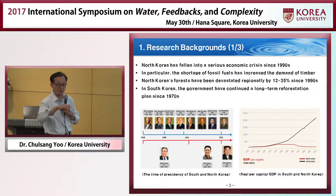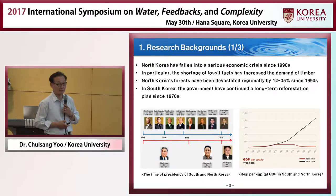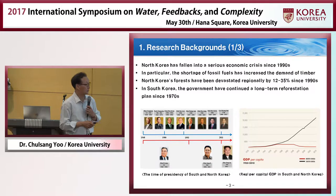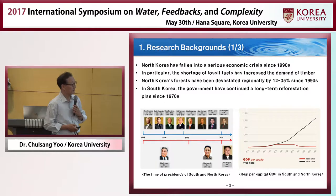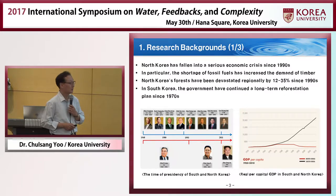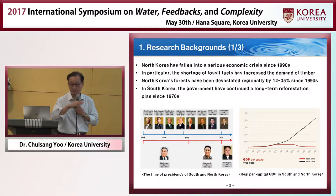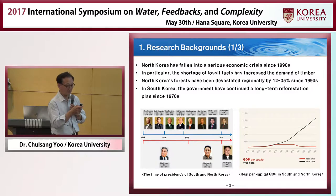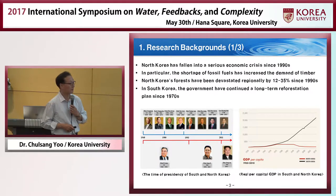But finally, he failed at the end of his ruling period. In fact, he prepared another dramatic economic development plan for the 1990s, but unfortunately they failed and could not increase the per capita GDP. As you can see in this figure, until the 1980s, the GDP per capita was a bit larger in North Korea, so their living standard was a bit higher than in South Korea. But after the 1980s, South Korea has been quite successful in developing their economy.